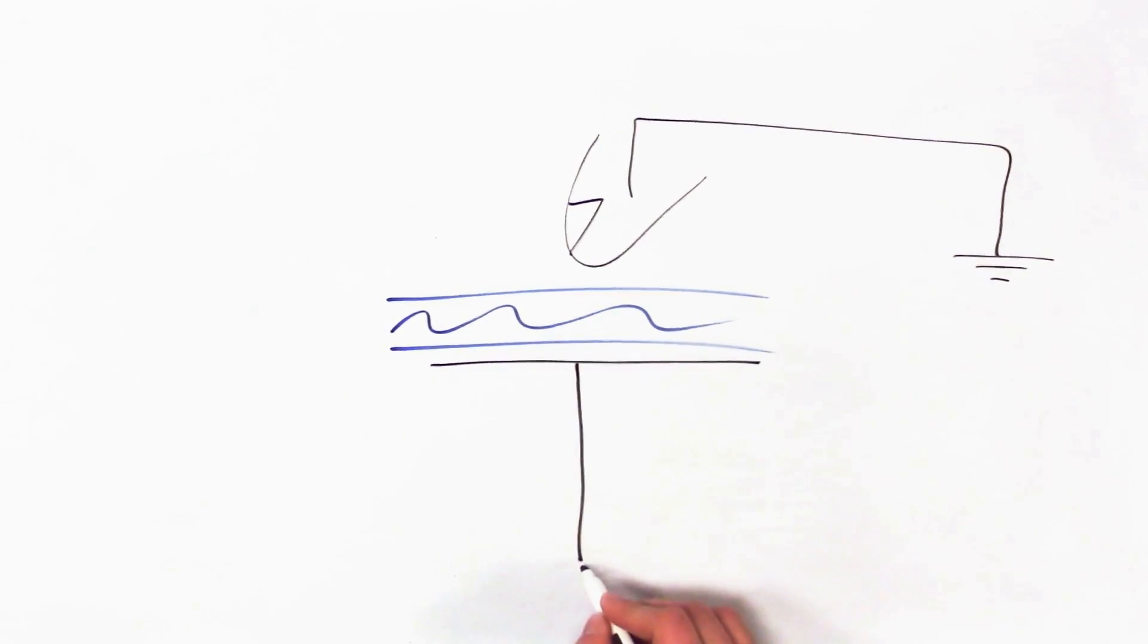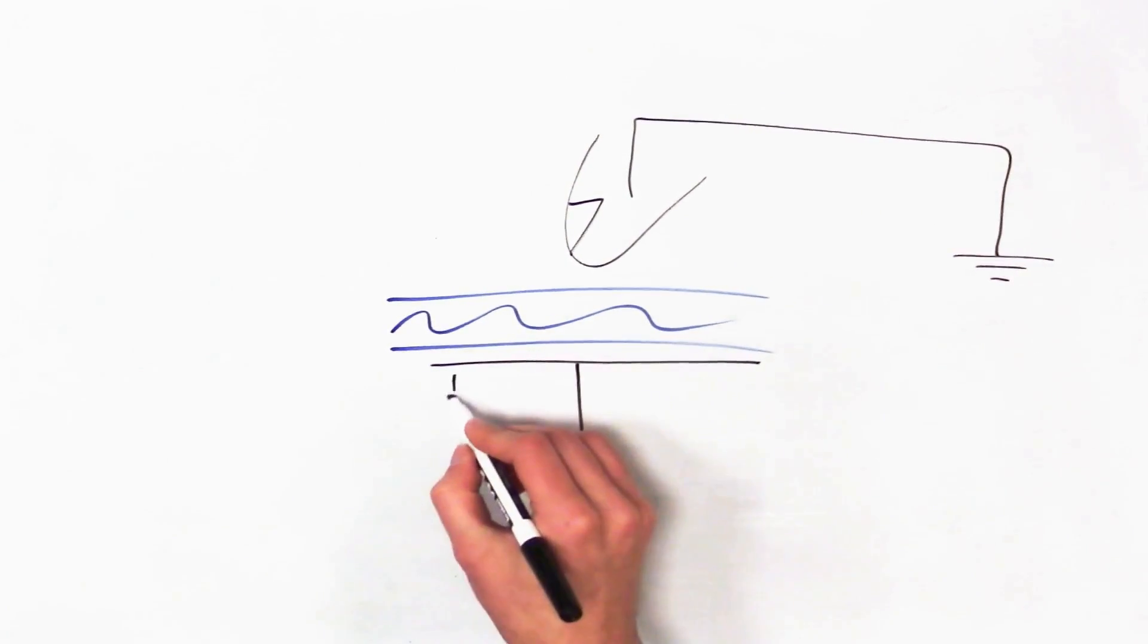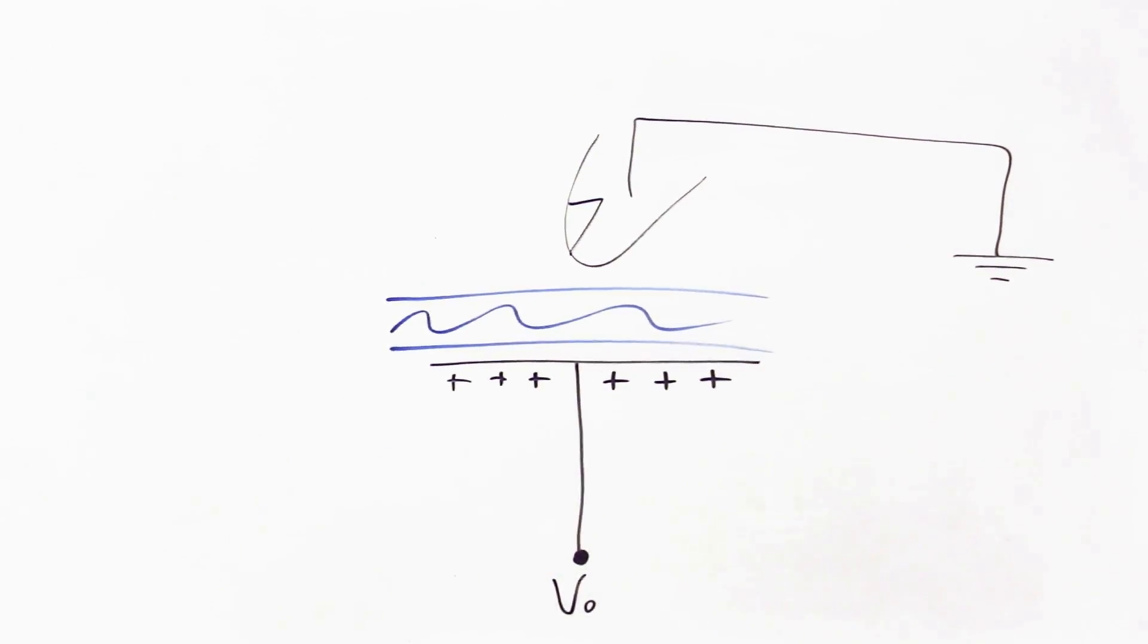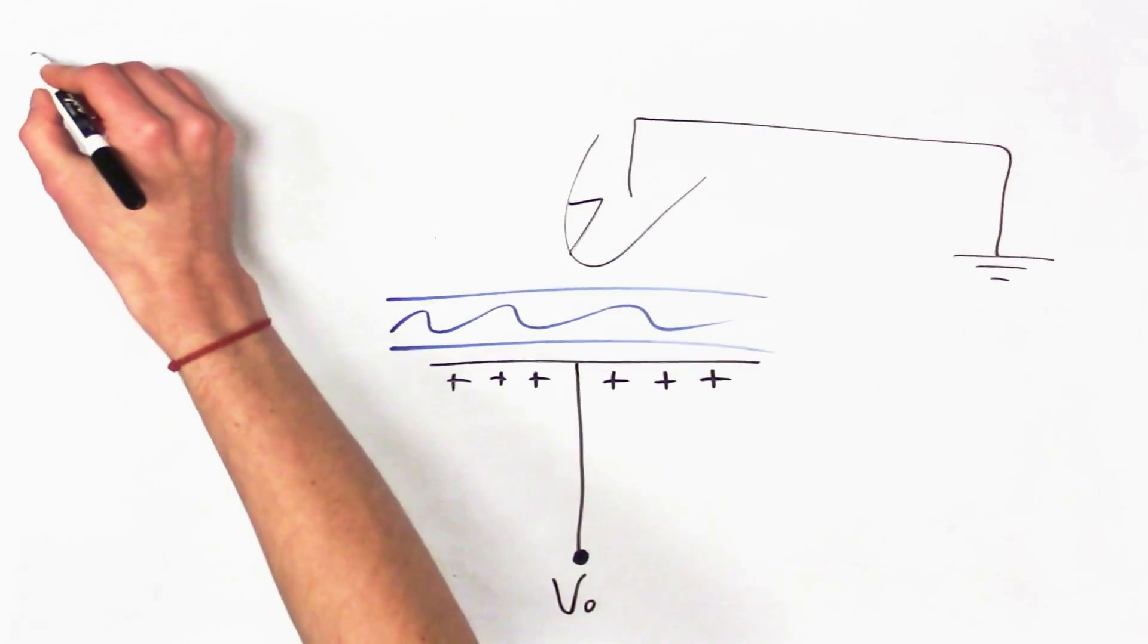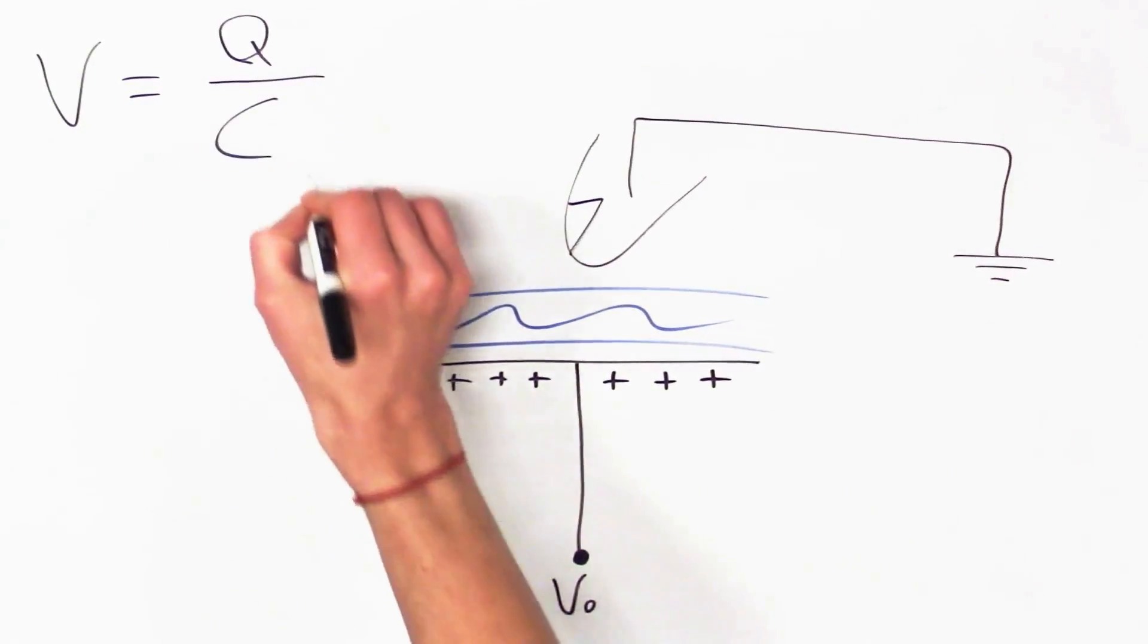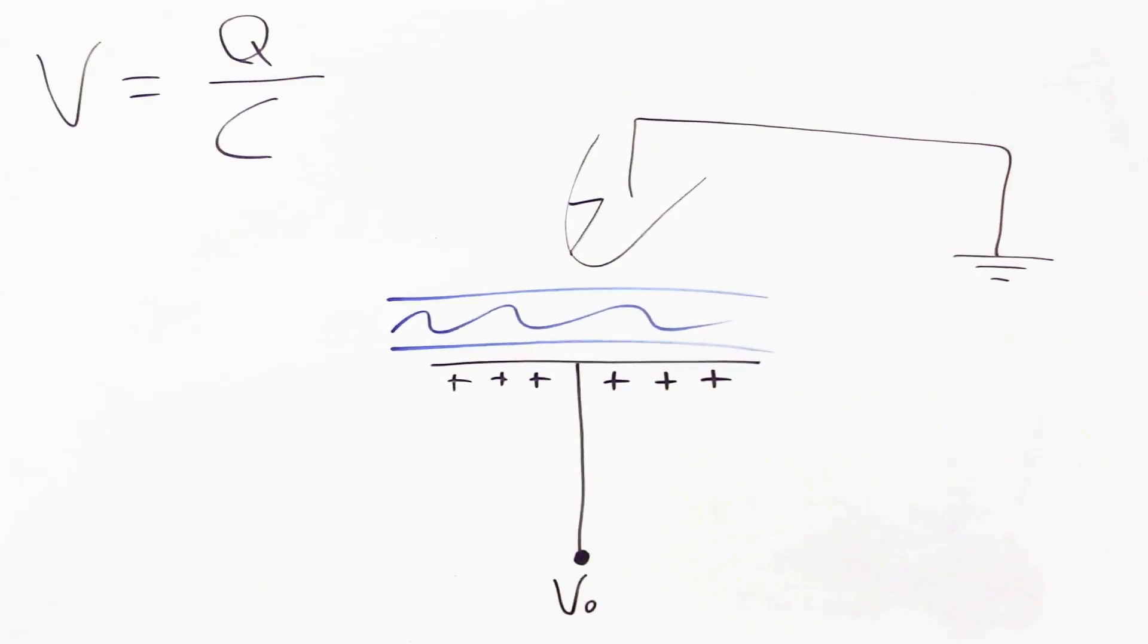So, the first thing it does is it actually puts a voltage on this electrode, and that puts some charge on, and a fundamental equation of capacitors is that the voltage across a capacitor is equal to the charge on that capacitor over its capacitance. So, this puts a fixed amount of charge on.